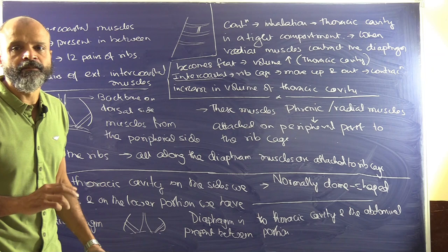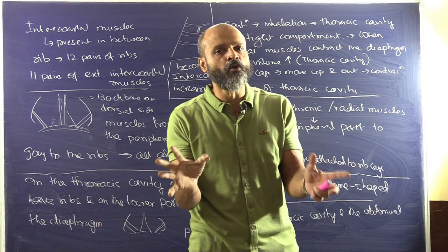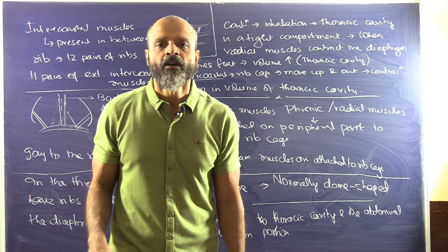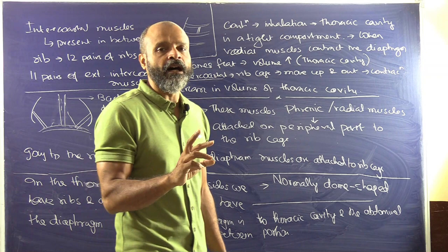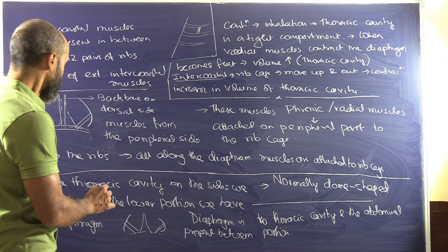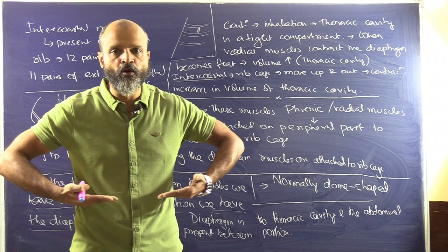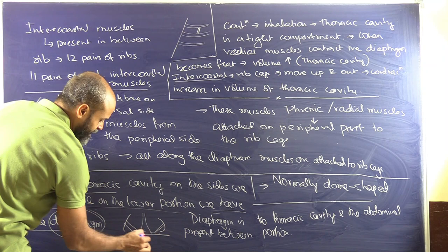Now we understand the mechanism of breathing, wherein contraction of certain muscles takes place. The lungs have almost no muscle mass, so they depend on two types of muscles for contraction and expansion — required for both inhalation and exhalation of air. The two muscles are the diaphragm and the intercostal muscles. The diaphragm is on the lower portion of our lungs and separates the thoracic cavity from the abdominal region. It is a highly muscular region.